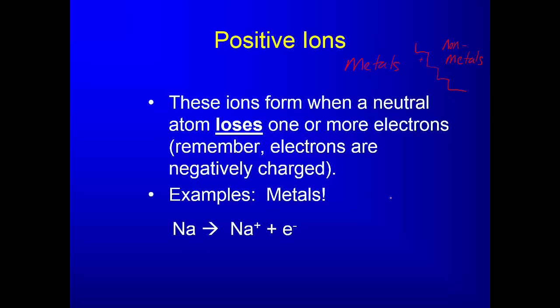Sodium normally has 11 positive protons and 11 negative electrons. We could write where they all are: 1s2 2s2 2p6 3s1. Sodium has 11 electrons and 11 protons. When it loses one electron, it now has 10 electrons. There's 11 positives and 10 negatives, so overall it has a positive charge.